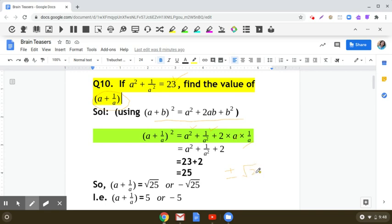So a + 1/a is either +√25 or it will be -√25.